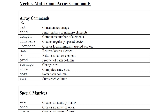Array commands: cat concatenates arrays vertically or horizontally. find returns indices of non-zero elements. length computes the length of an array. linspace generates linearly spaced numbers — you specify start, end, and count. logspace generates a logarithmically spaced vector. max returns the maximum value; min returns the minimum. prod gives the product of each column. reshape changes the size of an array.